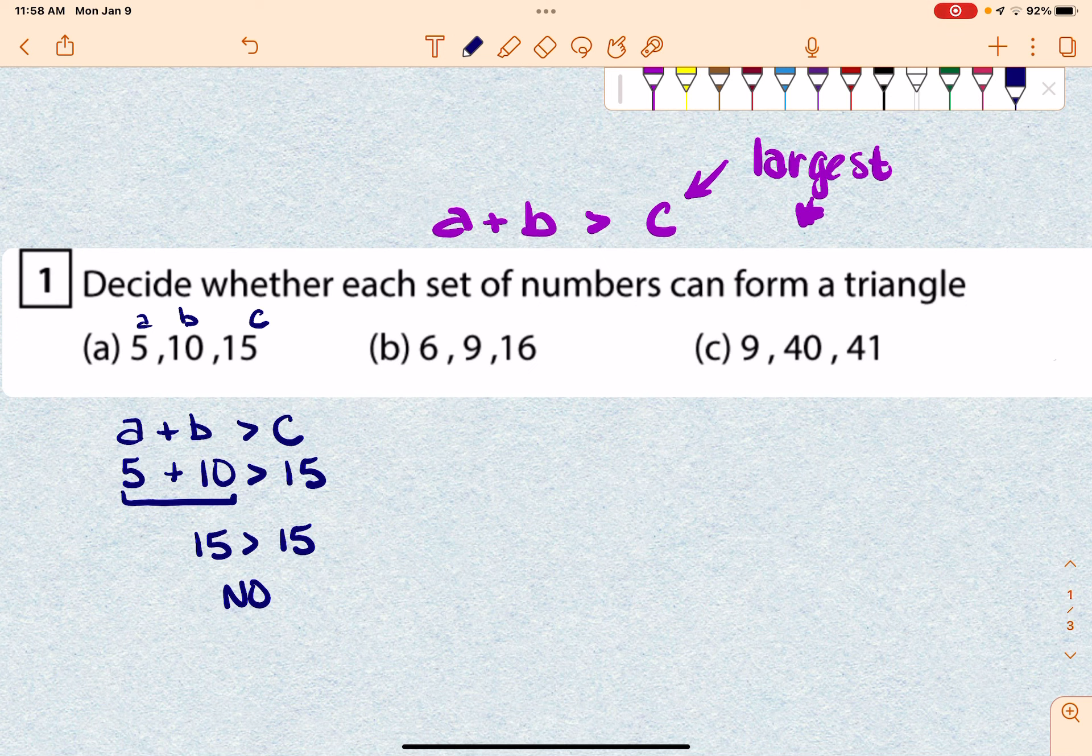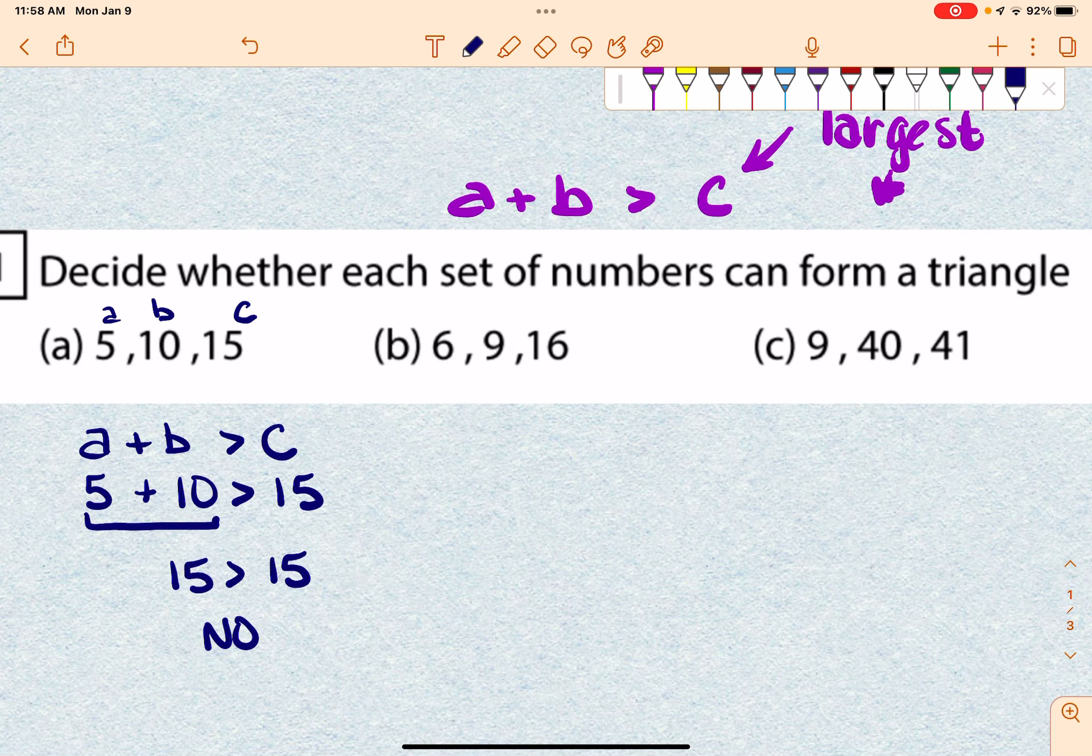Okay, now if I look at the next problem, the largest value would be C, or that would be 16. So 16 would be C, and I'm going to make these two A and B.